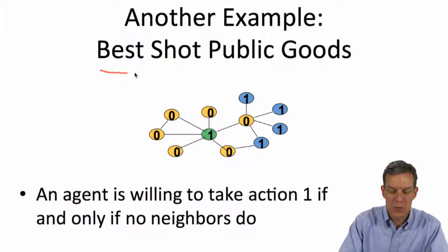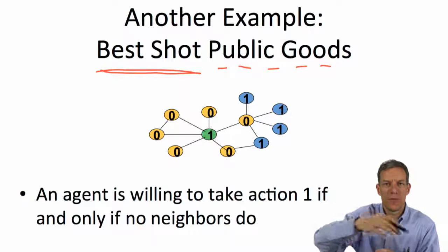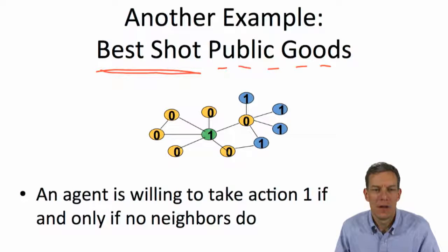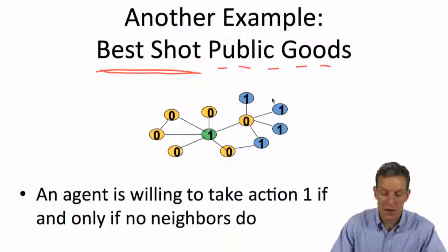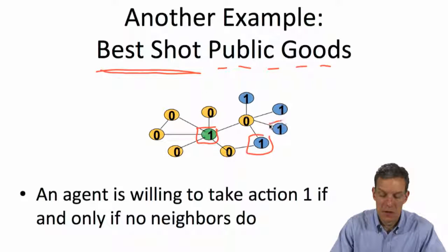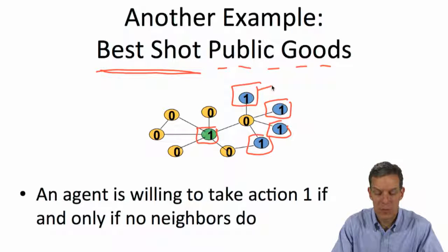So if we look at that example, this is known as what's called a best shot public goods game. So what matters to any individual is sort of the max of the actions in their neighborhood. And so that's called the best shot public goods game. An agent is willing to take action one if and only if no neighbors do. So here would be an equilibrium of that game. This person takes action one. None of the neighbors do. This person takes action one because no neighbors do. And so forth. That's an equilibrium of this game. That's a different game, and it's going to have a different shaped equilibrium to what we had before. Here now we have these people taking action one.